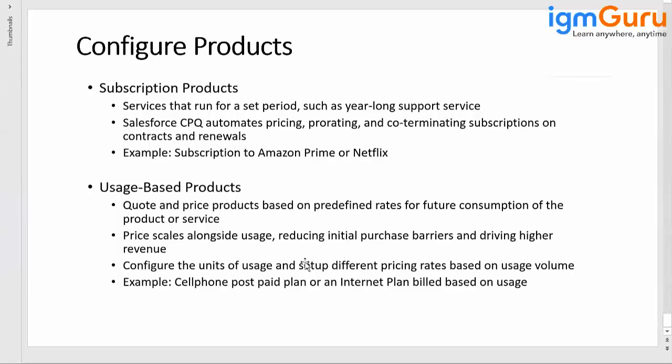An example of a usage-based product is a cell phone with a postpaid plan, or an internet plan billed based on your usage — like 1 GB data, 10 GB data, 100-minute talk time, or 2000-minute talk time. Based on that, the customer needs to pay. That product is known as a usage-based product. How much you use, you only pay for that amount. To quote and price a product based on a predefined rate for future consumption of a product or service is known as a usage-based product.